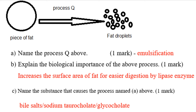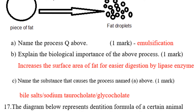Part B: explain the biological importance of emulsification. The importance is to increase the surface area of fat for easier digestion by the lipase enzyme. Part C: name the substance that causes emulsification. That substance is bile salts.